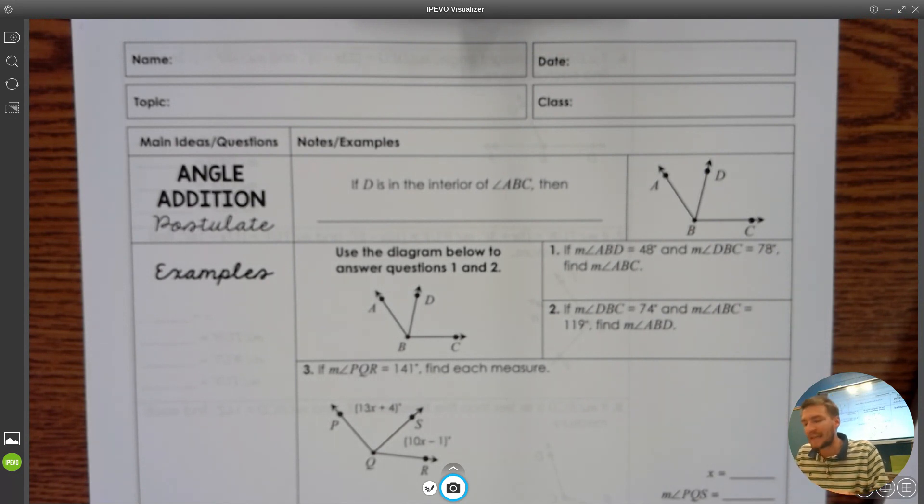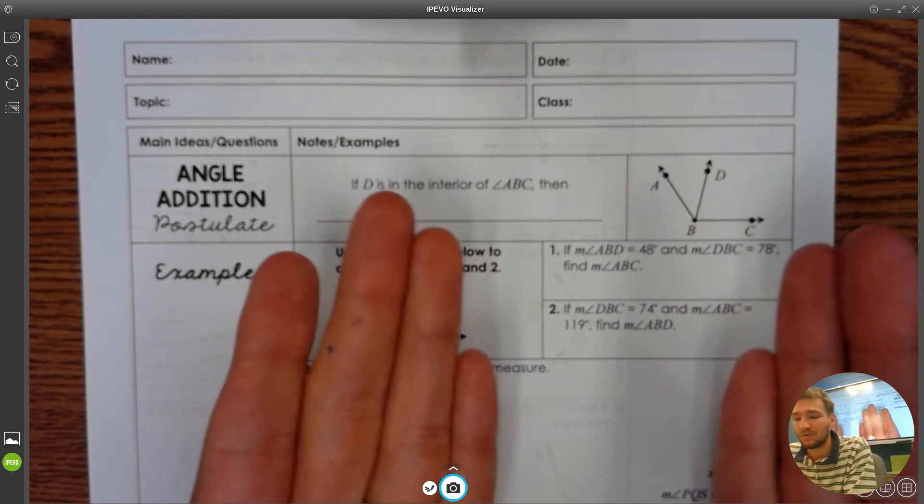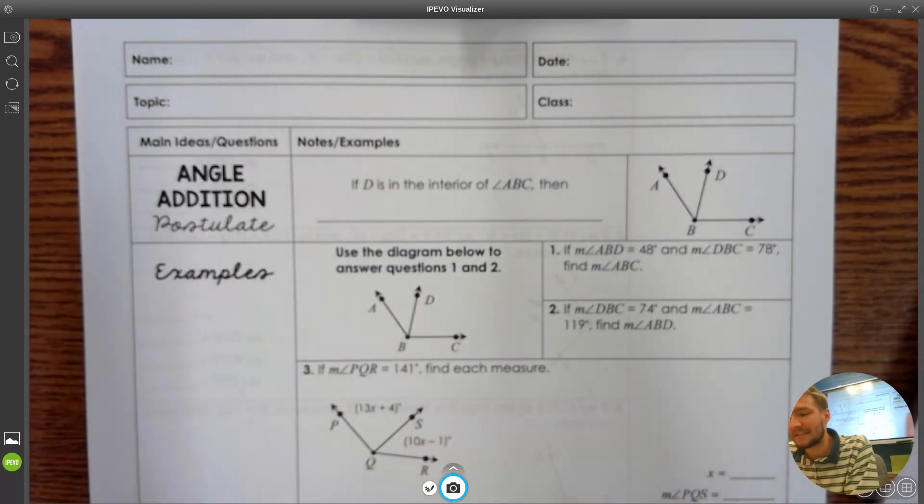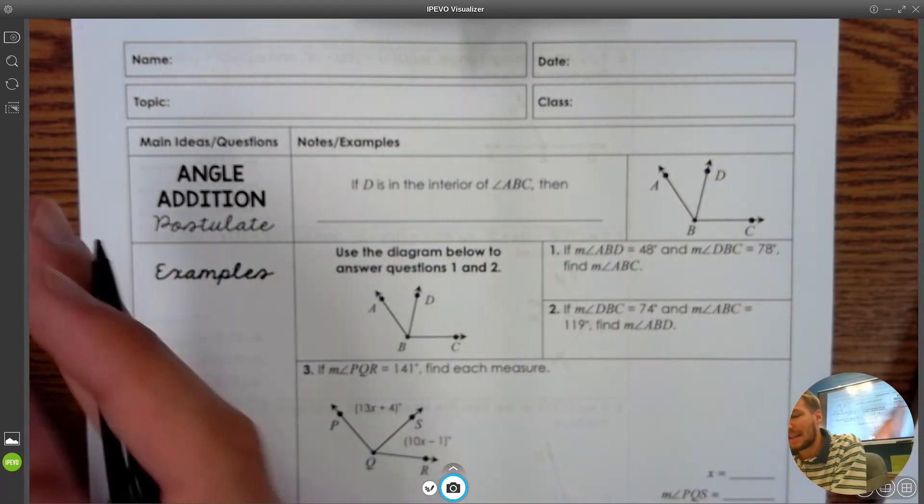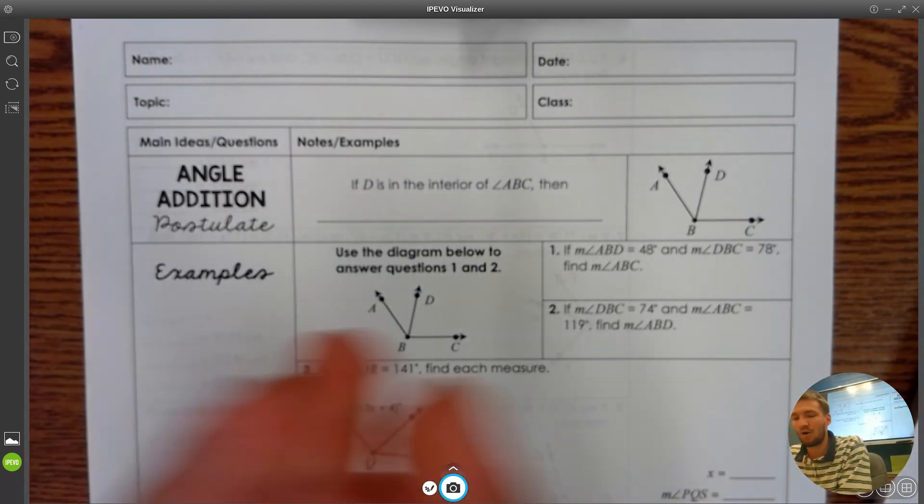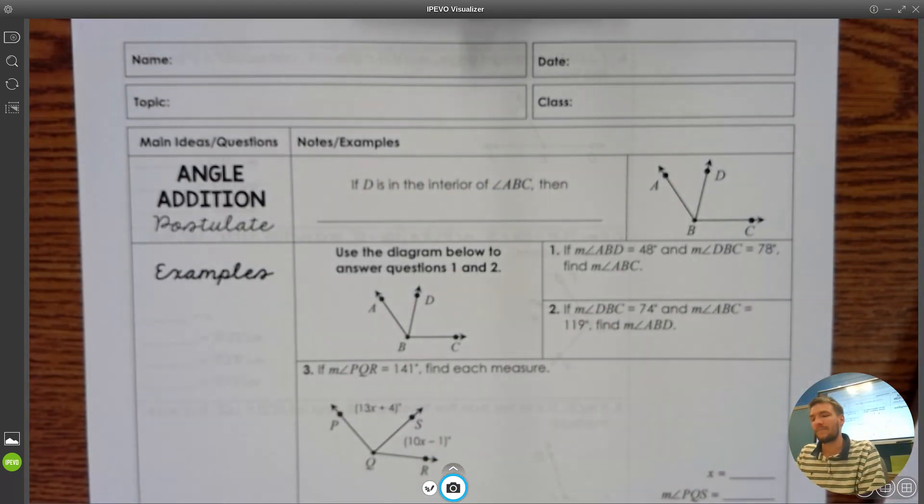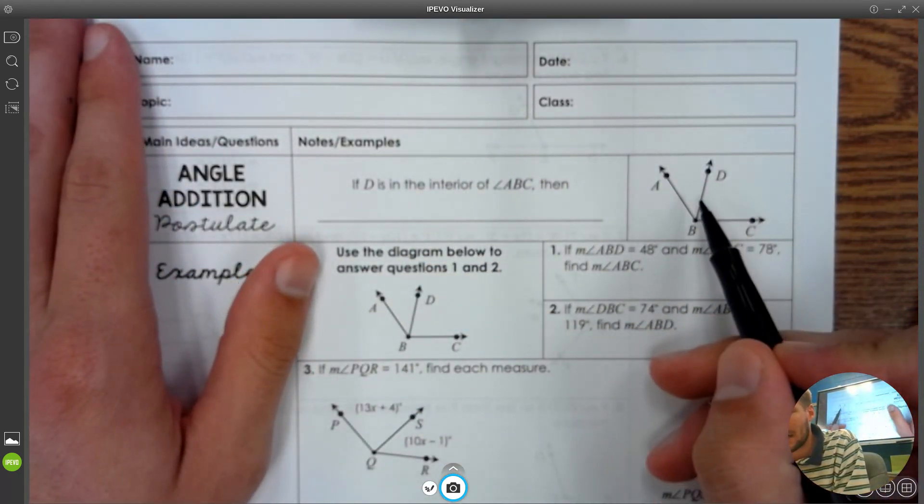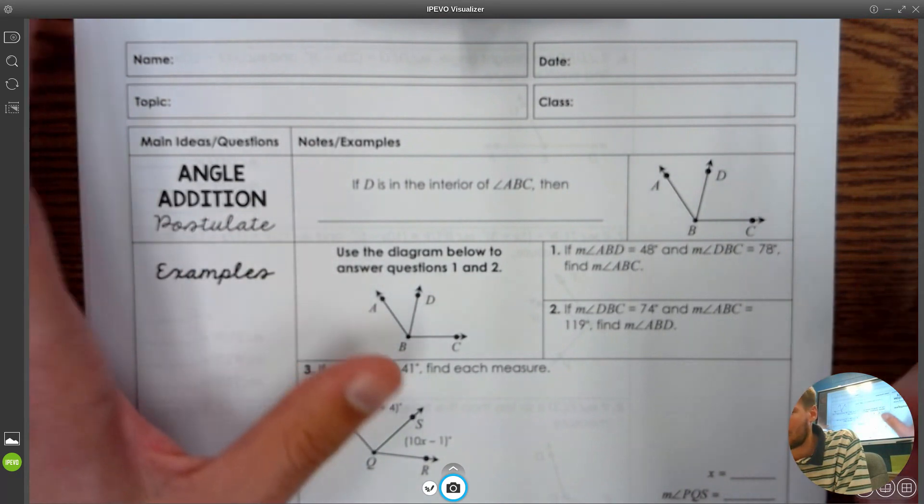If you recall the segment addition postulate, the two parts add up and they make the whole. The left plus the right equals the whole thing. When we're talking about angles, the angle addition postulate says the same thing. That the left plus the right equals the whole thing. Or some people like to say small plus small equals big, or the first piece plus the second piece added up together makes the whole thing.